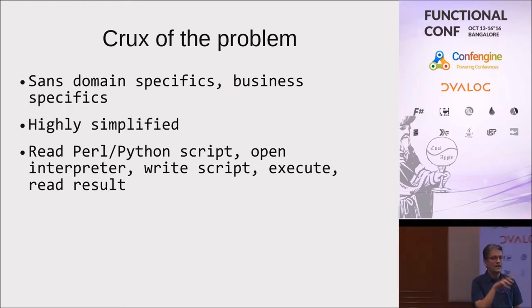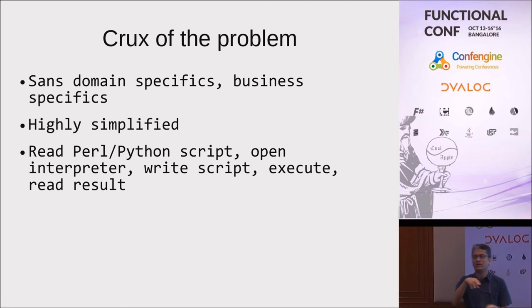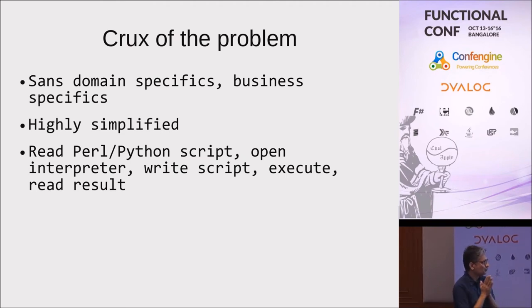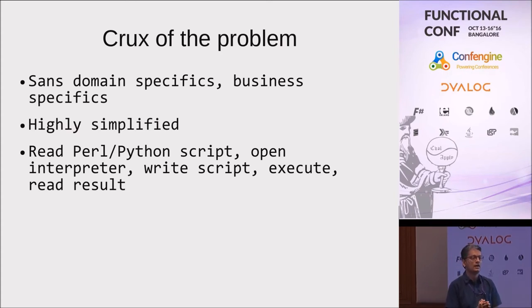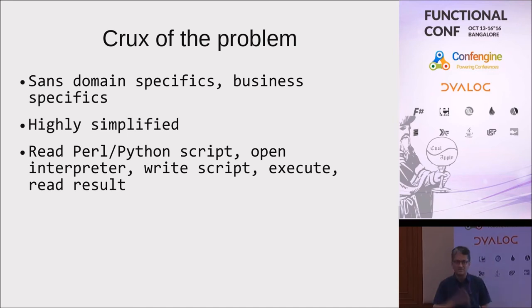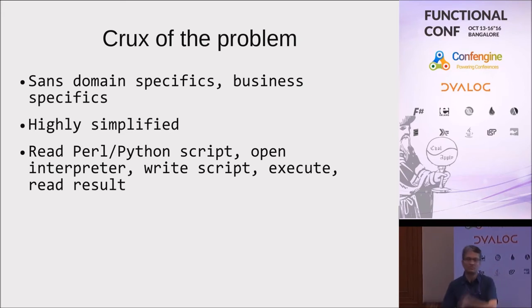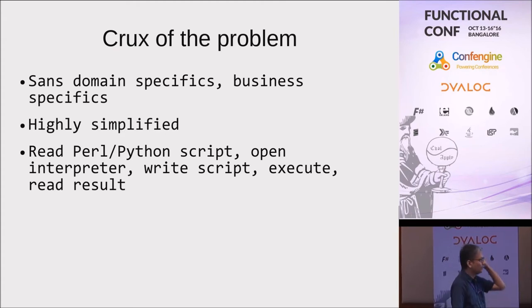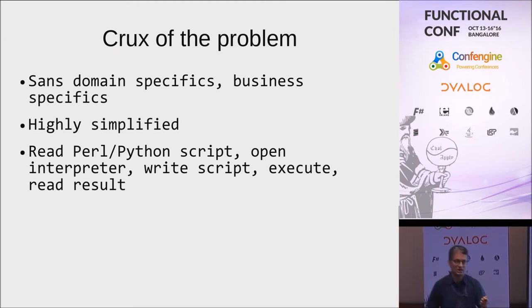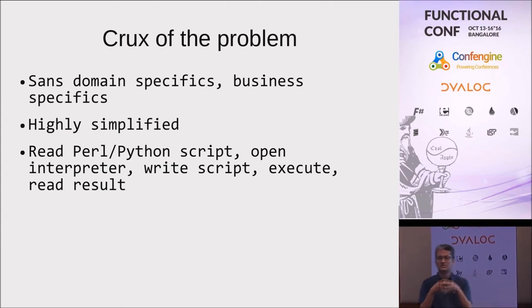Now we come to the crux of the problem. In theory all this sounds very nice; in practice I encountered a bunch of problems. This is how we execute Perl and Python: we do not run them from the command line as you would expect — Perl followed by the name of a file, or Python followed by a script name. Instead, we read every Perl and Python script into a cache in memory. We open the interpreter, write the script, let it run, and when the output is printed to stdout we read it back. This is the gist of processing.